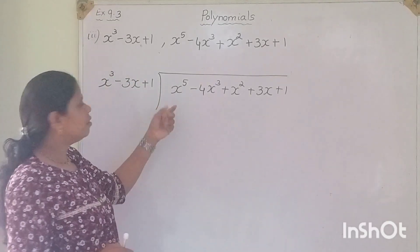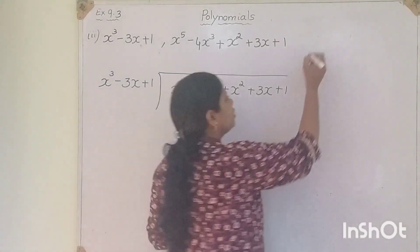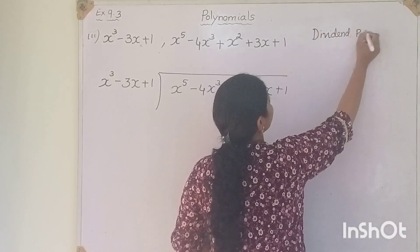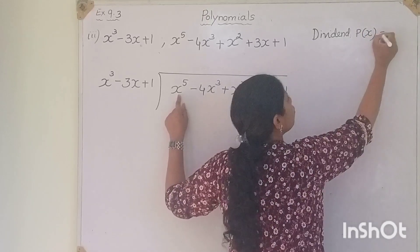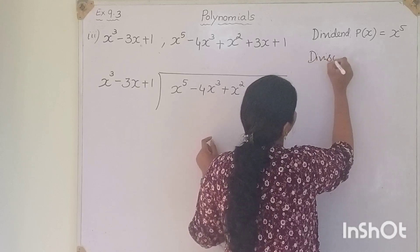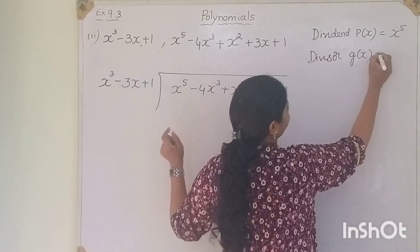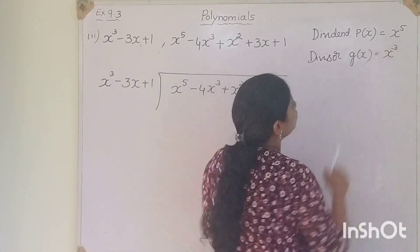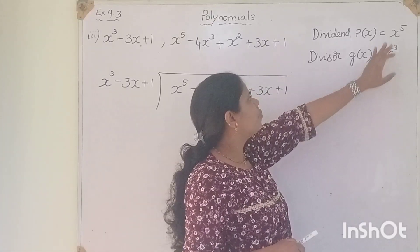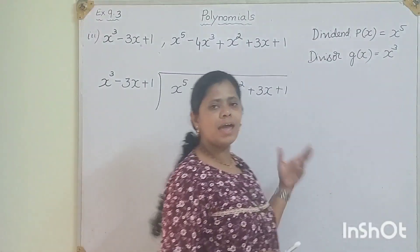We compare the first term of the dividend and the first term of the divisor. The first term of p(x) is x to the power of 5. The first term of g(x) is x cubed. The degree of the divisor is smaller than the degree of the dividend, so we can divide.